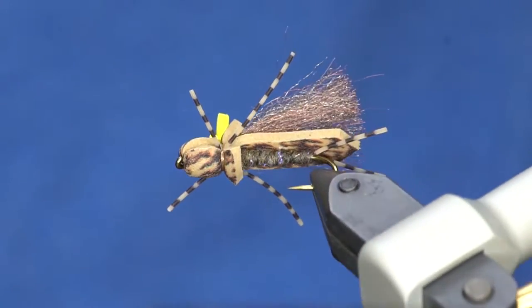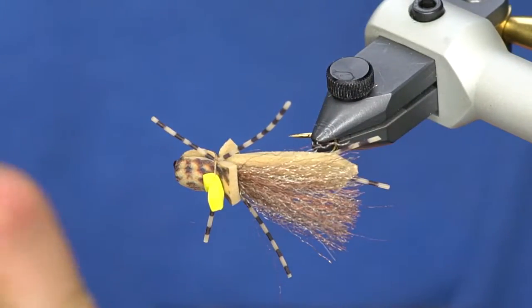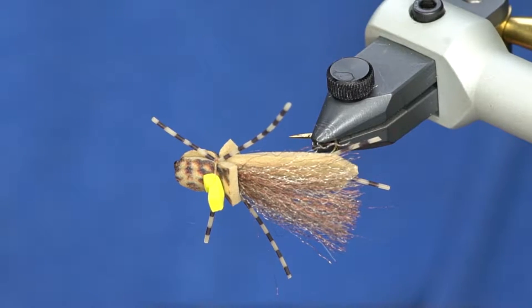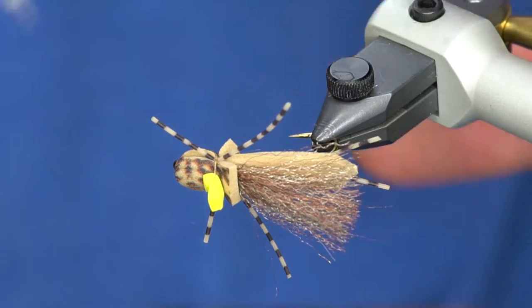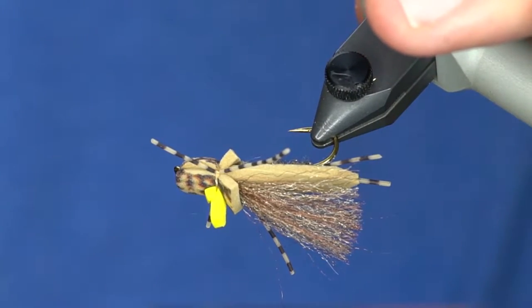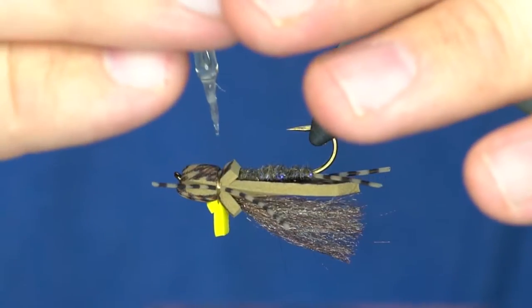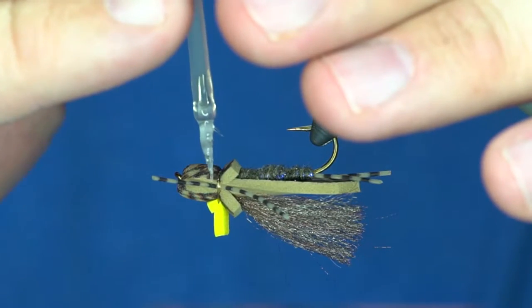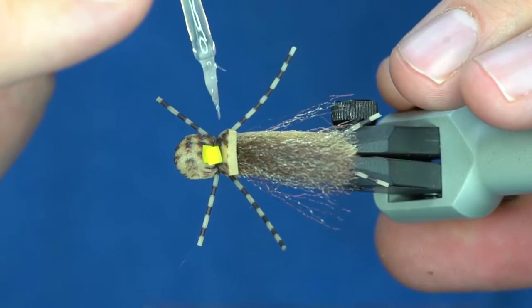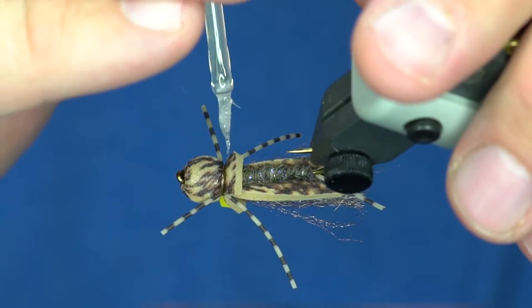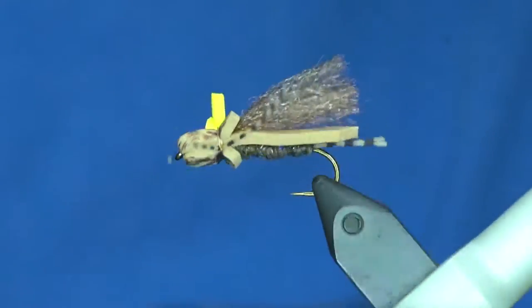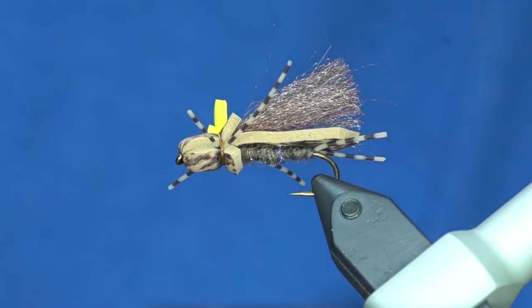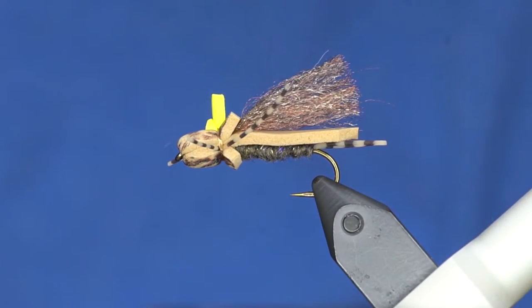You can do it in a bunch of different colors. Oh yeah, don't forget you got to put glue on this one or else it'll unravel because you didn't do a very good whip finish. Hand whip finishes are inferior to tool whip finishes. I'm going to dab a little bit of cement right where the legs were tied in and along the bottom. We're good.